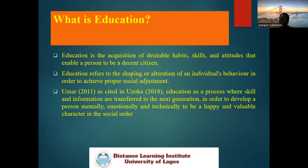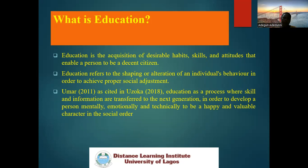It is important that we look at what education is. We are going to be looking at three definitions of what education is. Education is the acquisition of desirable habits, skills, and attitudes that enables a person to be a decent citizen. You acquire skills, habits, and attitudes that enable you to be a decent citizen. When somebody behaves in an unruly manner, the first thing we tend to ask is: is this person educated? Because we expect that when you are properly tutored — whether through formal or informal education — we will be looking at all those aspects as we go along in the course.